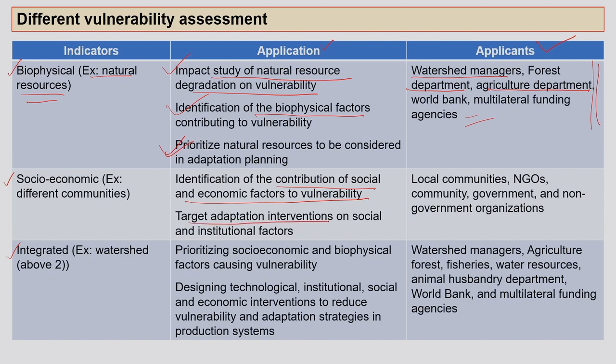Socio-economic indicators help identify the contribution of social and economic factors to vulnerability and help target adaptation interventions on social and institutional factors. At the end of the day, if there are changes in the system, people's livelihoods get affected, and the entire social fabric may get disturbed. Socio-economic indicators help understand this. The people who work on this aspect include local communities, NGOs, and government and non-government organizations.